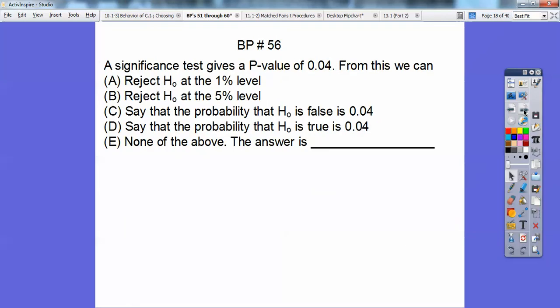All right, so a significance test gives a p-value of 0.04. From this, we can, which is, this is 4%. Remember, you move the decimal over two places, it's 4%. So can we reject it at the 1% level? No. Can we reject it at the 5% level? Yes. Can we say the probability of H0 is false at the 4%? That doesn't make too much sense. Not in our statistical language. Say the probability that H0 is true at the same thing, that doesn't make sense. So it's choice B on that one.